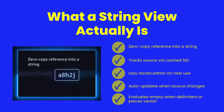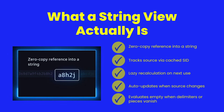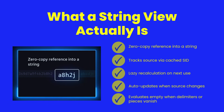A string view is a live pointer into the internal storage of another string. It does not allocate. It does not copy. Instead, it stores a cached slice into the source and rechecks boundaries only when needed. If the source string changes, the view does not immediately recompute its offsets. Instead, the next time you reference the view, it lazily recalculates the slice from the updated base string. This results in extremely fast repeated accesses and predictable, no-surprise behavior when strings are reassigned or modified.